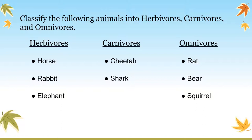As you can see on the screen, we have divided the animals into three groups: herbivores, carnivores, and omnivores. Horse, rabbit, and elephant are herbivores. Cheetah and shark are carnivores. Rat, bear, and squirrel are omnivores.